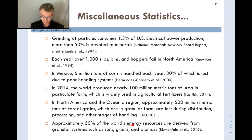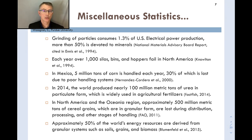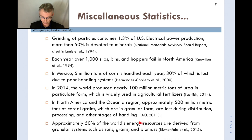Approximately 50% of the world's energy resources are derived from granular systems such as soils, grains, and biomass. For example, there are projects processing corn stover to turn it into ethanol, along with other biomass materials like wood chips and switchgrass. Quite a bit of the world's energy resources come from these kinds of particulate materials.